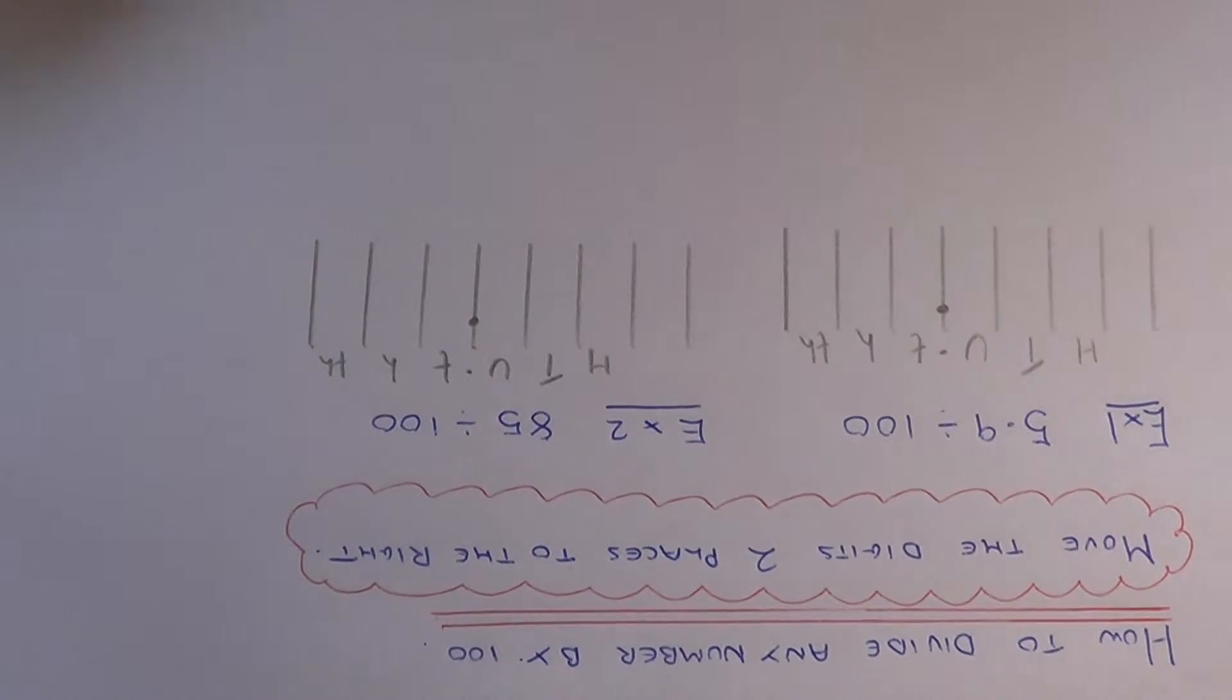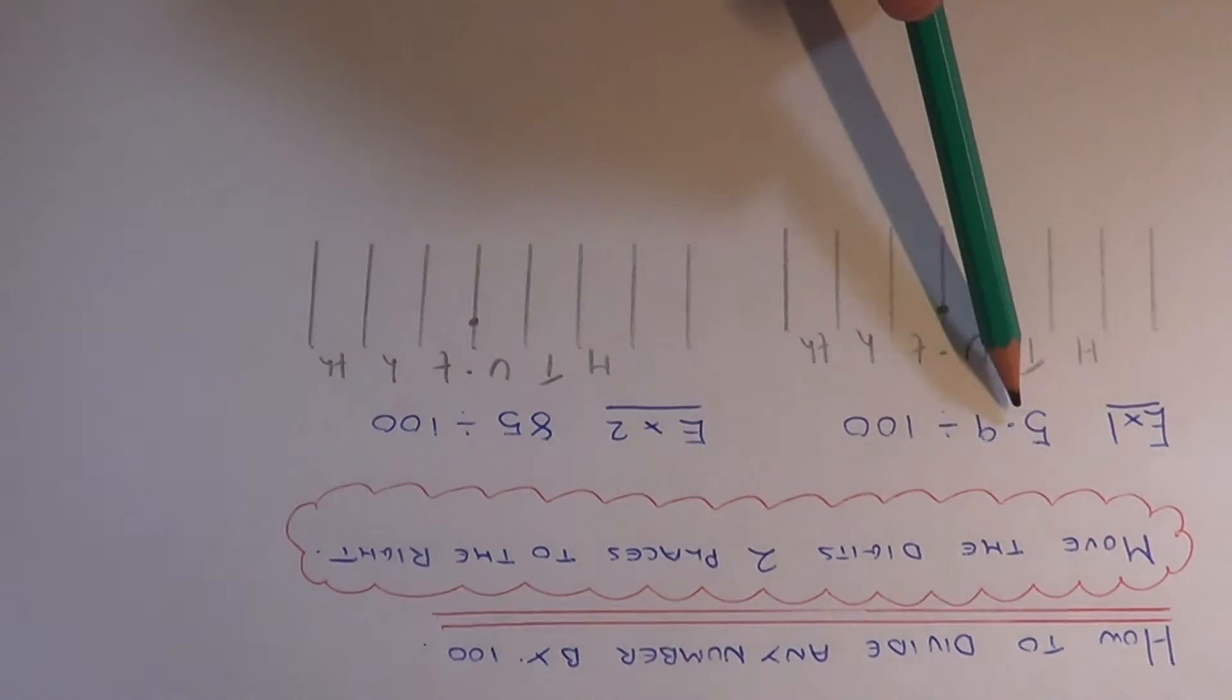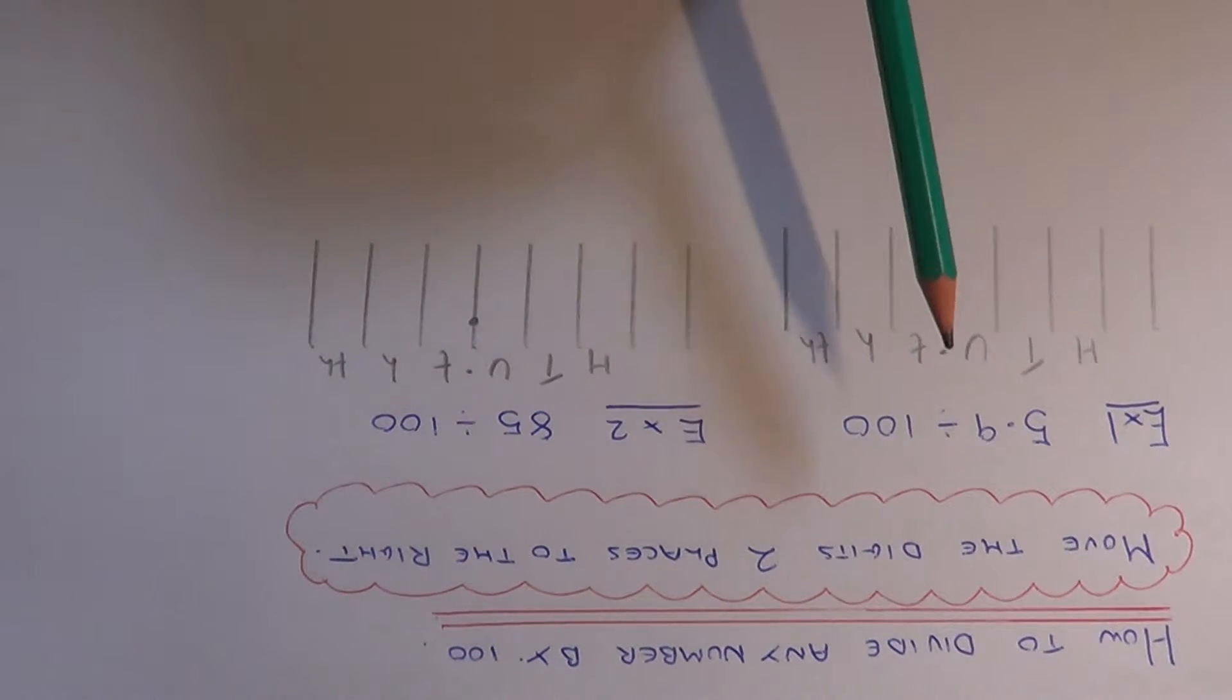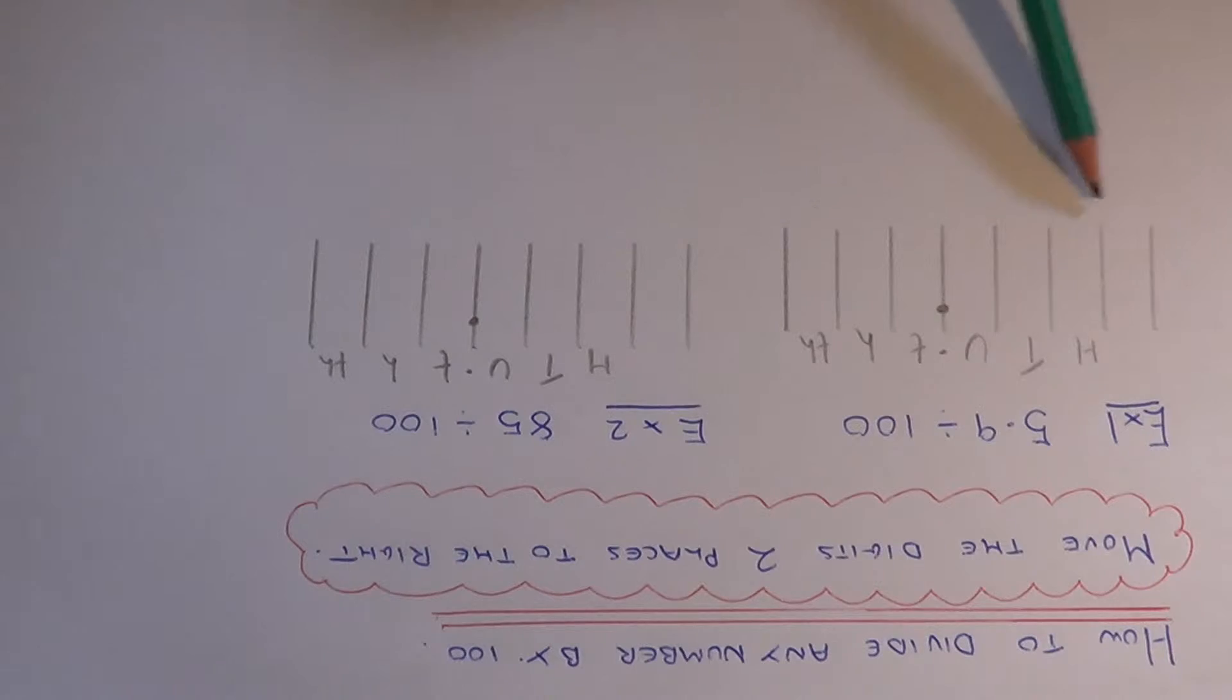Let's have a look at our examples. Example 1: we've got 5.9 divided by 100. I've already drawn out the columns here.